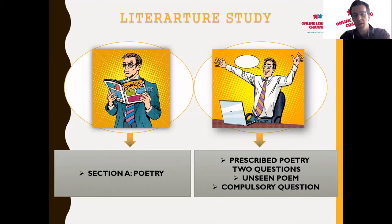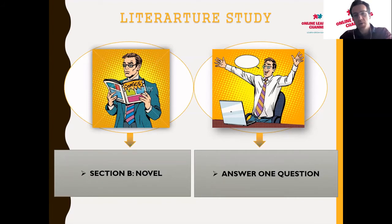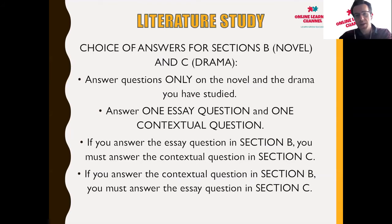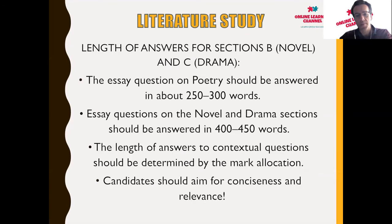For poetry, you'll be faced with prescribed poems you've prepared for, and possibly an unseen poem. The novel section is the focus of today's discussion — we'll be looking at the Life of Pi. The dramatic items are often Shakespearean productions. When answering questions in Section B and C, you'll face either an essay question or a contextual question, and you need to answer one or the other in each section.